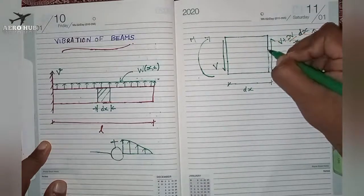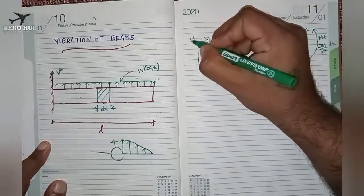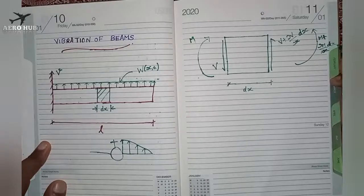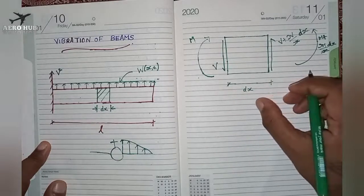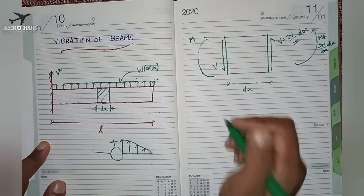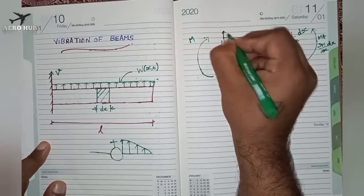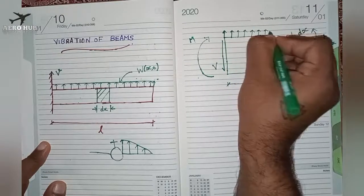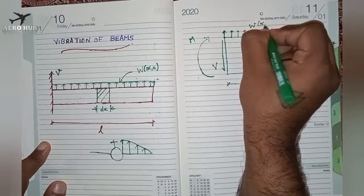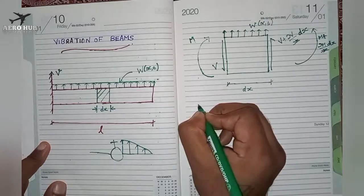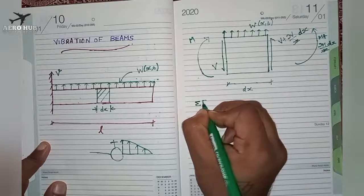This gives the shear force on each face; similarly M is the moment on one side and M plus (∂M/∂x)·dx represents the rate of change of moment with respect to x, multiplied by dx, the total length of the element slice. We also have a uniformly distributed load throughout this slice of the beam, that is w(x, t).